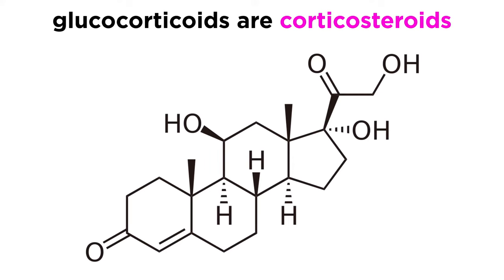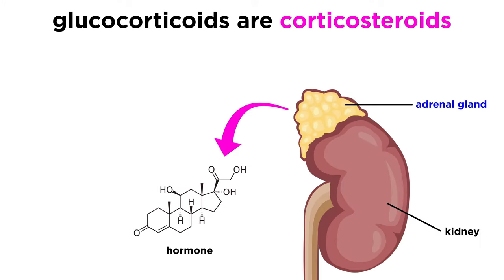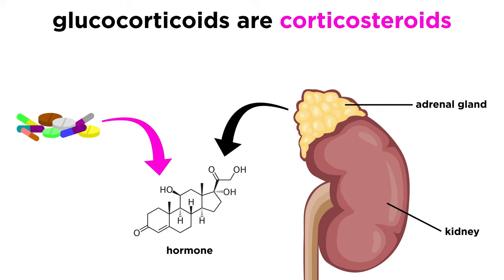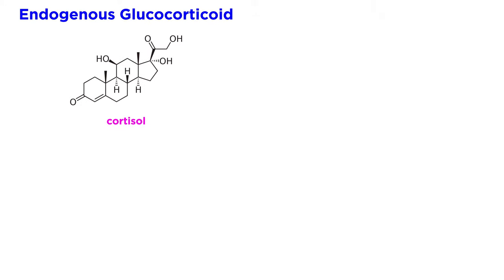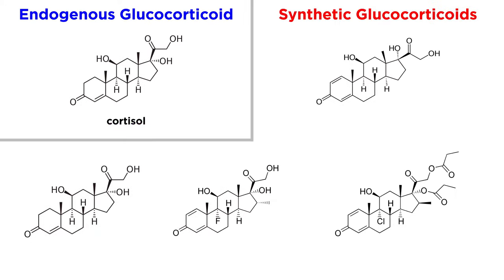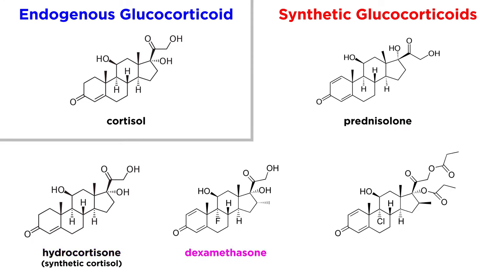Glucocorticoids are a class of corticosteroid. These are hormones that are endogenously produced in the adrenal cortex of the adrenal gland, but they are also sometimes given therapeutically through exogenous pharmacological deployment. The endogenous glucocorticoid is cortisol, but for more favorable pharmacology, synthetic alternatives are often used instead. These include prednisolone, hydrocortisone, dexamethasone, and beclomethasone dipropionate, though there are many more.